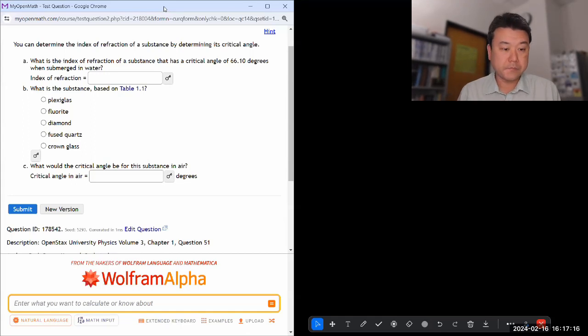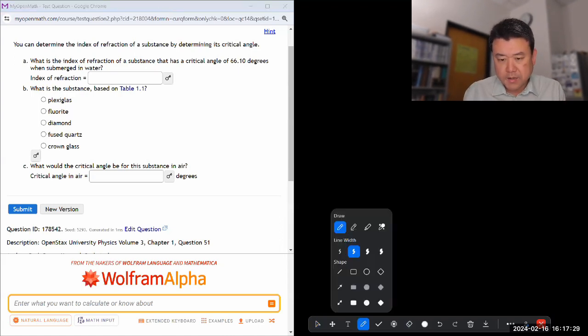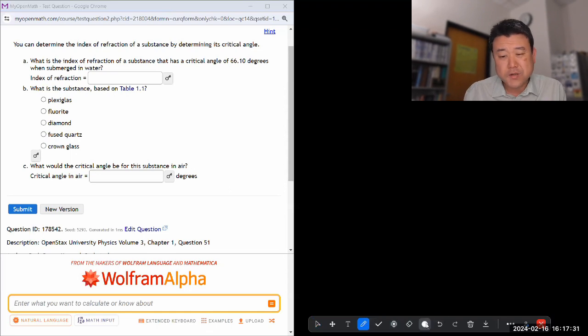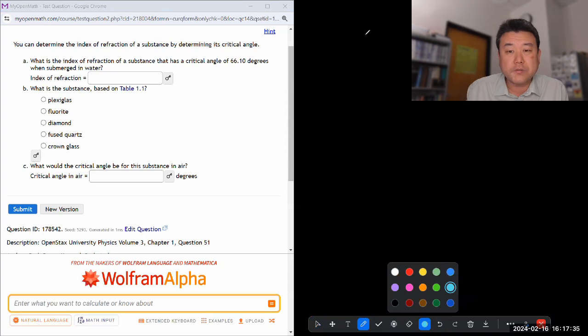Okay, so let's look at this question. It says you can determine the index of refraction of a substance by determining its critical angle. Sure, you can. So the scenario that you are thinking through is something like this. Your textbook does the derivation, which you can totally use. This question doesn't require deriving it.